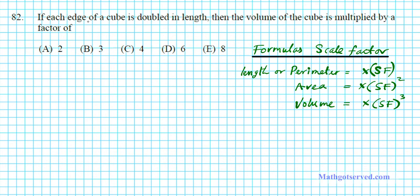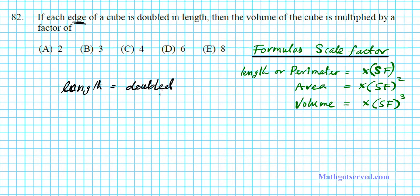In this situation, it says if each edge is doubled. So what has been doubled here? An edge represents the length. So if each edge is doubled, then the volume of the cube is multiplied by a factor. For the length, we had a situation where it was doubled. What does double mean? If you double something, you're scaling it by a factor of two. So since you double a length, the scale factor is equal to two.